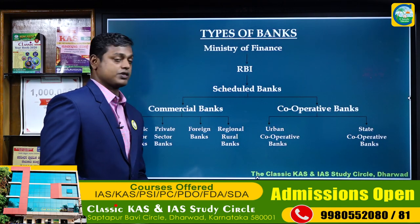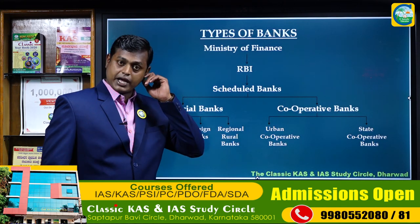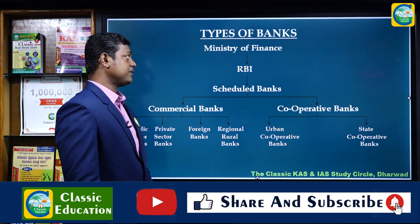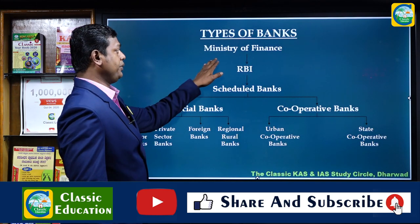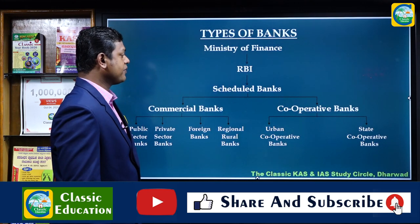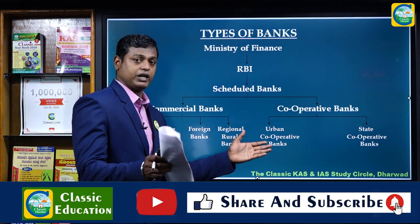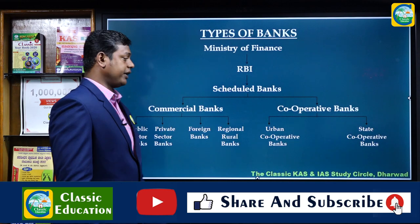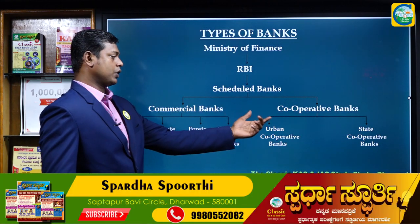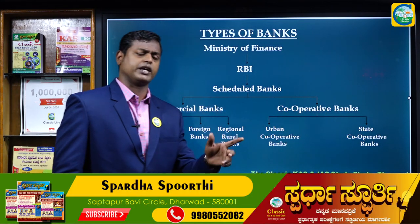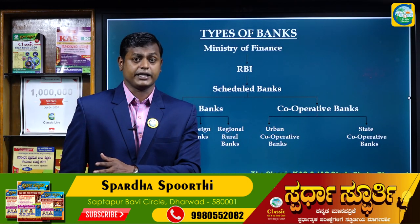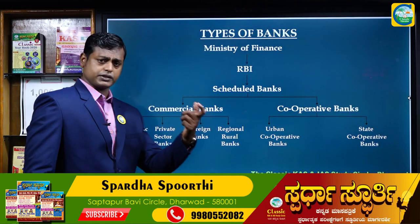Now let's look at types of banks. Banks come under the Ministry of Finance. They are divided into commercial banks and cooperative banks. Under commercial banks: public sector banks, private sector banks, foreign banks, and RRBs (Regional Rural Banks). Cooperative banks include urban cooperative banks and state cooperative banks.